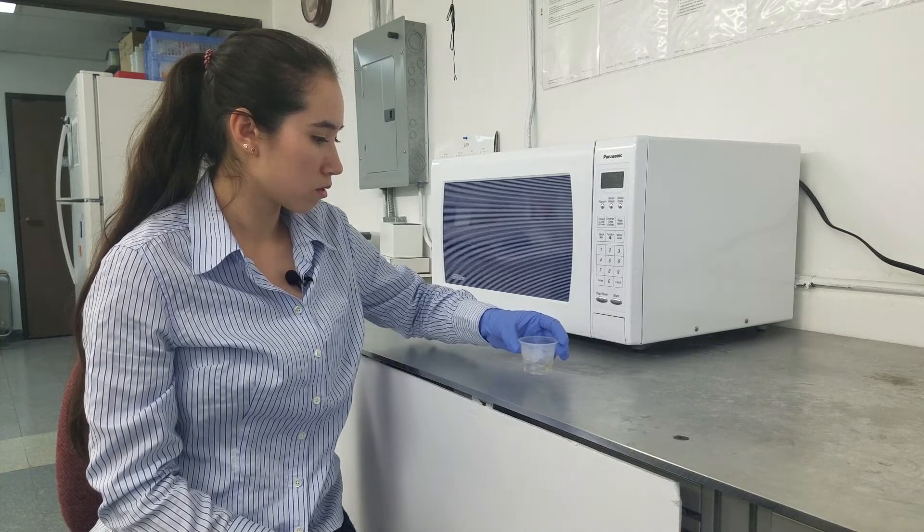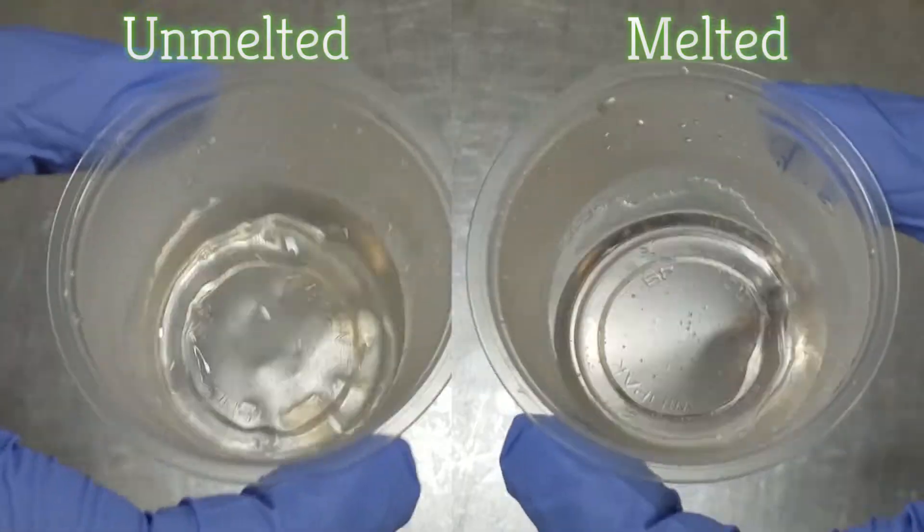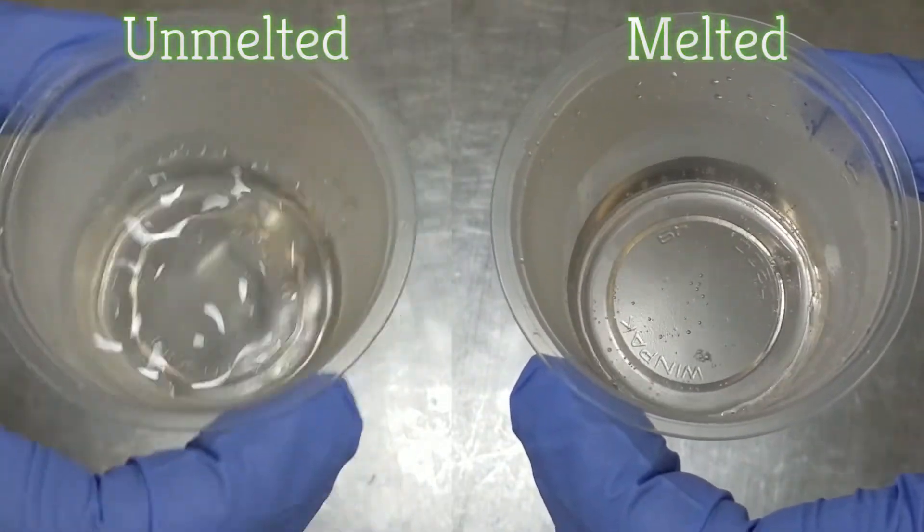One way to be sure that the agarose is completely melted is to look for any bubbles or shadows. Unmelted agarose refracts light less smoothly than melted agarose. Allow it to cool for 15 seconds.